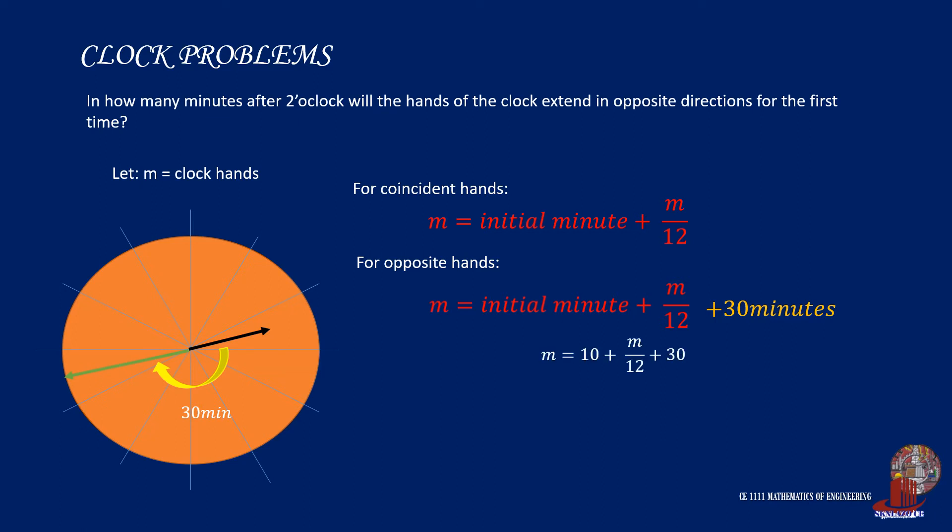From the modified equation, we plug in values arriving at m equals 10 plus m all over 12 plus 30. And simplifying, we would have 12m equals 480 plus m. So by extracting m, we get 43.64 minutes or the time as 2:43.